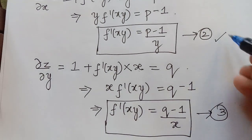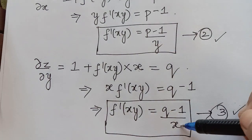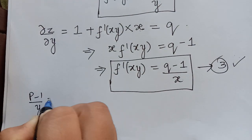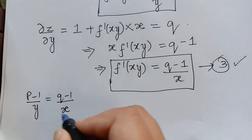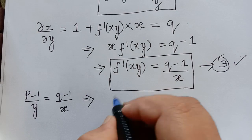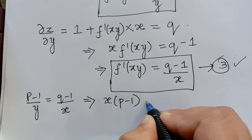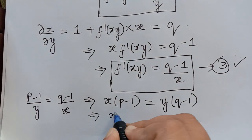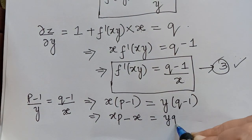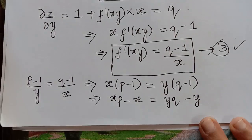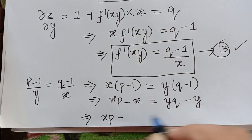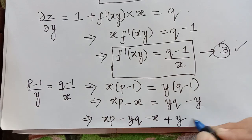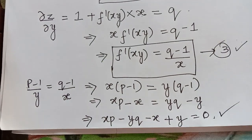Now we compare equation 2 and equation 3. On equating them, p minus 1 by y is equal to q minus 1 divided by x. Cross multiplying, x multiplied with p minus 1 is equal to y multiplied with q minus 1, which gives xp minus x equal to yq minus y. Bringing everything to the left hand side, we obtain xp minus yq minus x plus y is equal to 0. This is the required partial differential equation.